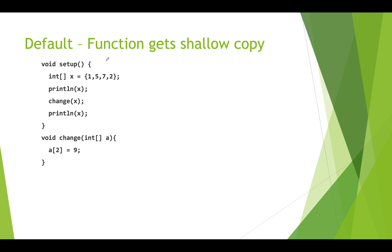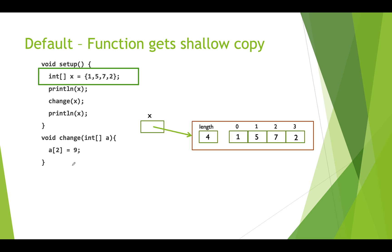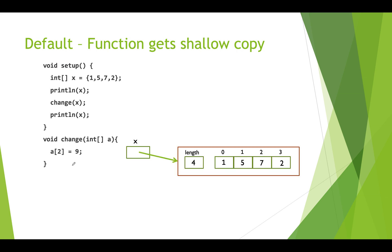Here we have some code. We have a Processing setup function, and in our setup function we're creating an array of ints called x. We're calling another function called change, which takes in an int array and does something to it. First we create our int array called x and use literal creation to put four integers into it.